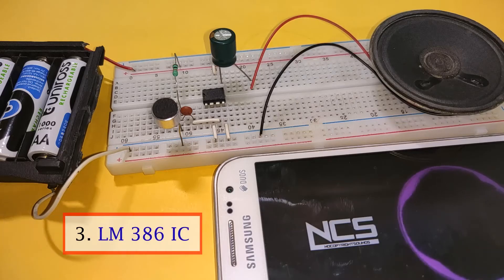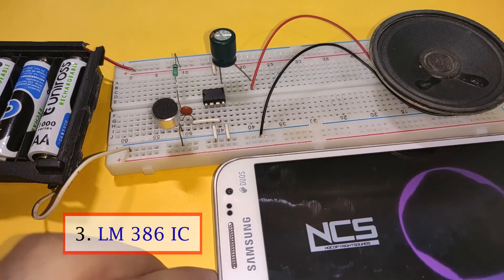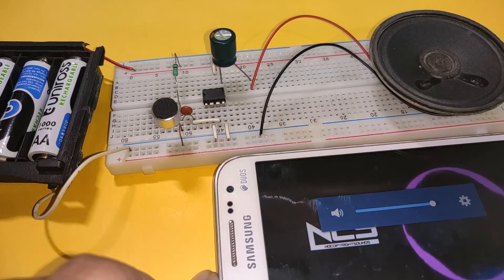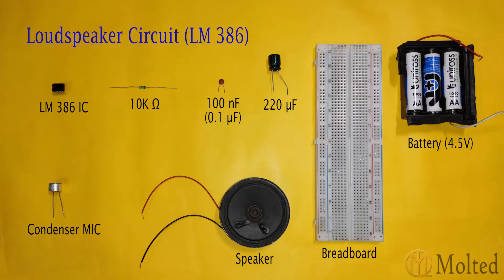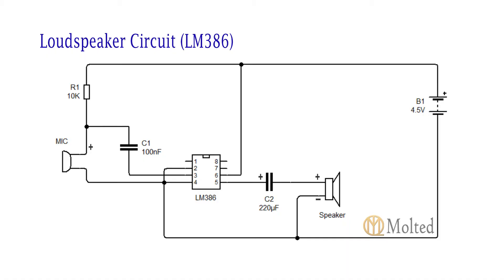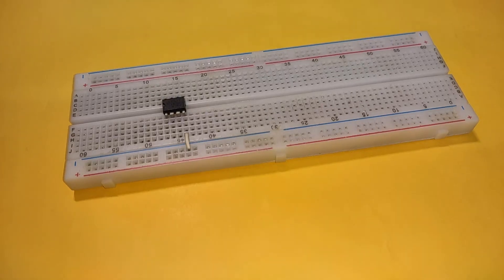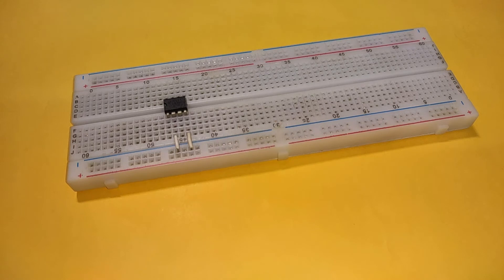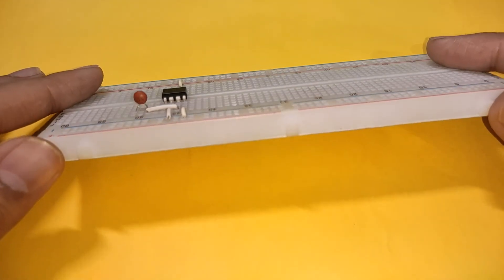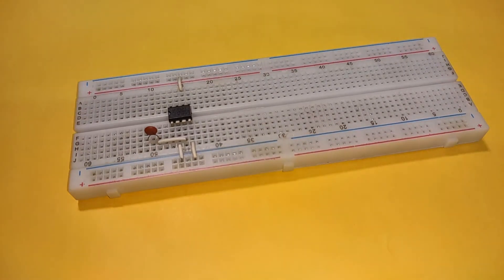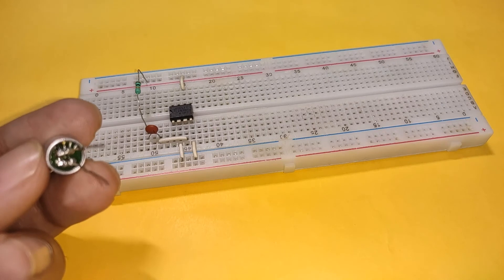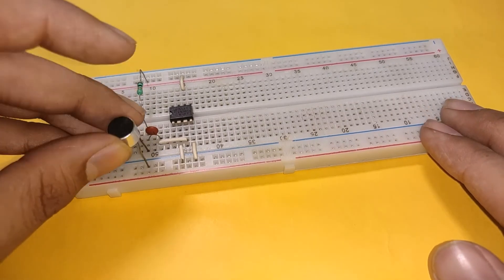The last circuit is by using LM386 IC. These are the required components. And this is the circuit diagram. Place the LM386 IC on the breadboard with its pin 4 and pin 2 connected to the negative rail. Connect pin 6 to the positive rail. Then connect pin 3 to one terminal of a 0.1 microfarad capacitor. Connect its other terminal to the positive rail via a 10K resistor. Also connect this terminal to the positive lead of the mic, and connect the negative lead of the mic to ground.